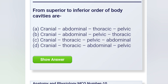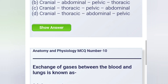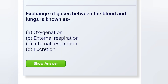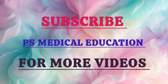Next question: The superior to inferior order of body cavities is — the correct answer is D. Next question: Exchange of gases between the blood and lungs is known as — the correct answer is External respiration.